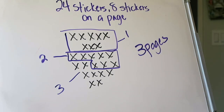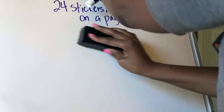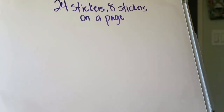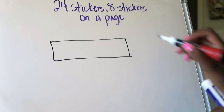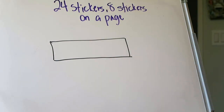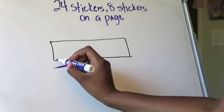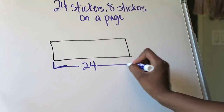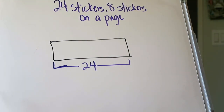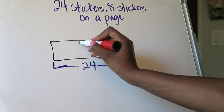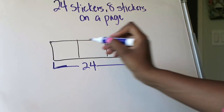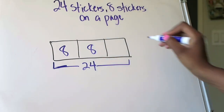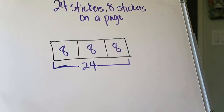If I wanted to represent what happened in this model using the bar model, I can also represent that pretty easily. I know I had 24 stickers and wanted eight on a page, so I needed three pages. The whole bar represents a total of 24. I'm going to separate my bar model into three equal pieces, showing eight stickers in each section. That's how you visually represent it using a bar model.